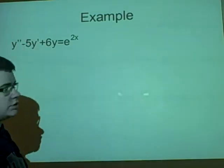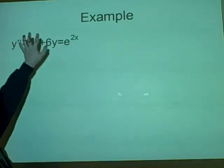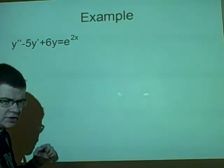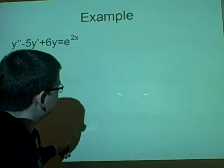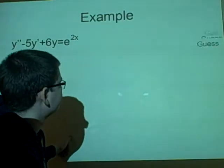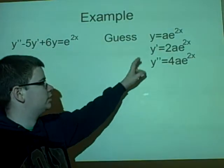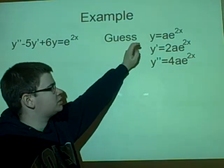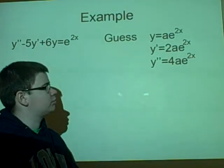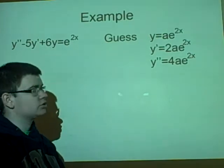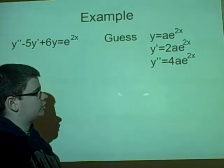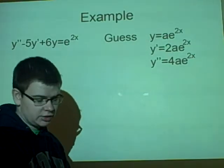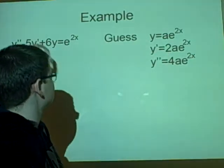We have another example as well. This is the same equation, but equals e^(2x). So we can guess something like alpha*e^(2x), ae^(2x). So we differentiate it and get y'=2a*e^(2x), and then we differentiate it again to get y''=4a*e^(2x). Then we substitute these into here.